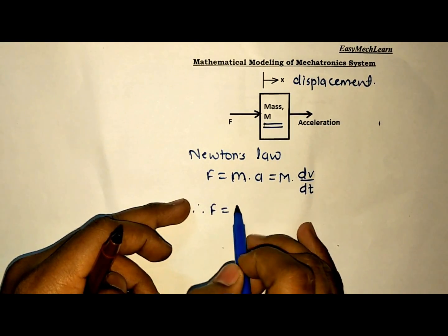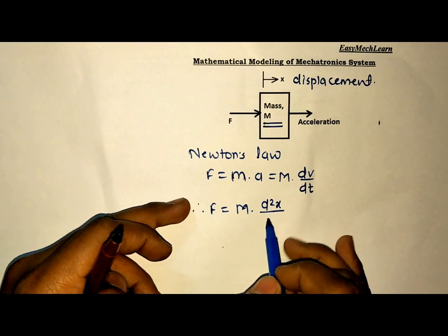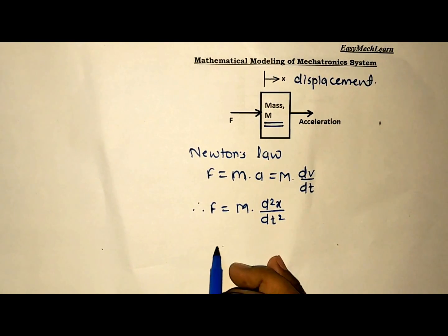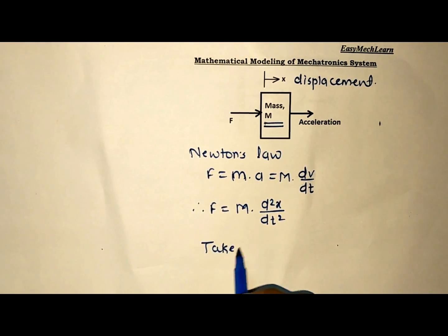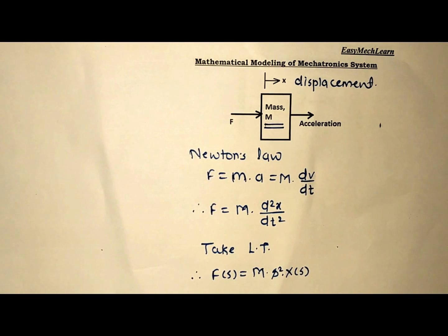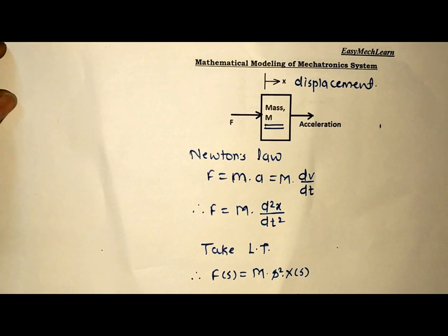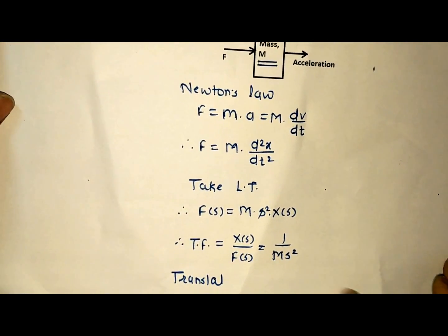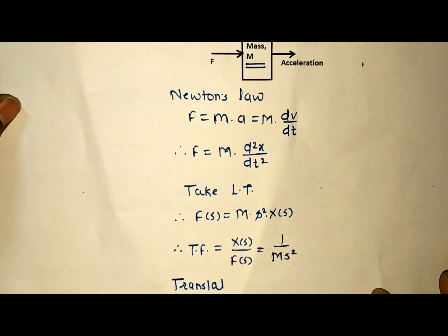Taking the Laplace transform: F(S) = M·S²·X(S). Simplifying, the transfer function X(S)/F(S) = 1/(M·S²). This is the transfer function for mass in translational motion. Now let us find the mathematical modeling of mass in rotational motion. J is the moment of inertia of the given body, omega is the angular speed, and T is the torque acting on the body. Torque applied on any body is equal to moment of inertia times angular acceleration alpha. So T = J·(dω/dt) = J·S²·Θ(S). The transfer function Θ(S)/T(S) = 1/(J·S²). This is the transfer function for rotational motion.